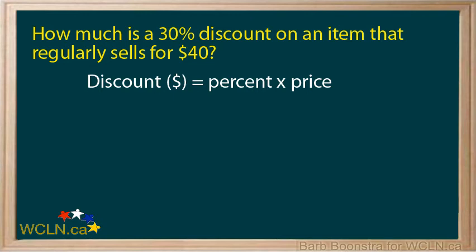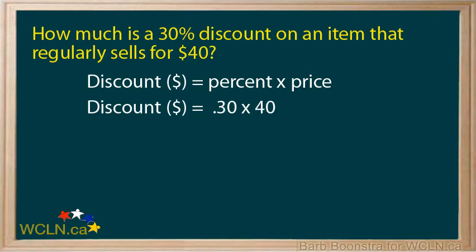How much is a 30% discount on an item that regularly sells for $40? Remember that the discount in dollars is equal to the percent times the price. So the discount would be .3 times 40, the original price. .3 times 40 is $12, so the discount is $12.